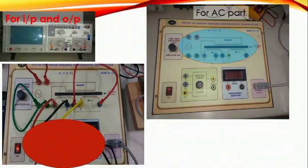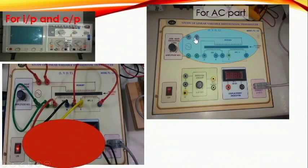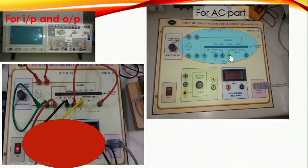Now let's see the actual connection for the AC part, and after that we will see the DC part. This is the main part for AC observation. Connect both terminals — B and B are connected to each other. You can connect here to here, but I suggest connecting here to here. The terminals S, C, A, and C are for the output terminal, and from here to here you connect the input terminal.